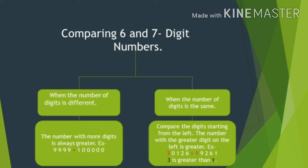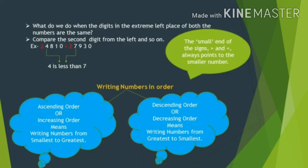Rule number 2: when the number of digits is the same, we compare the digits starting from the left. The number with the greatest digit on the left is greater. Comparing from the left means we look at the leftmost digit of both numbers first. If those are equal, we look at the second digit from the left. If those are also equal, we then look at the third digit, and so on until a larger digit is found. With the help of comparison, you can arrange numbers in ascending and descending order.